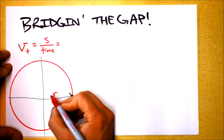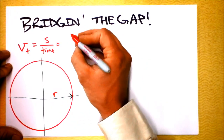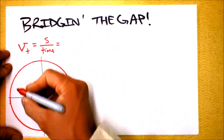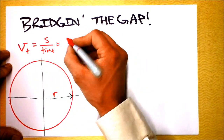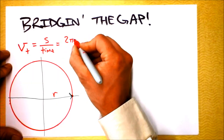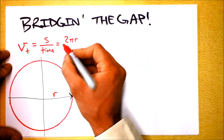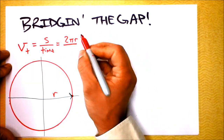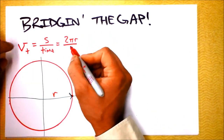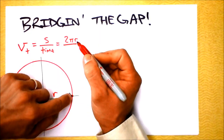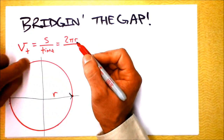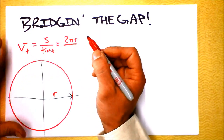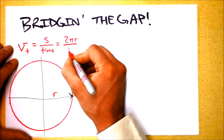If this circle has radius r, the arc length going all the way around is 2πr — everyone learned in fifth grade that the circumference of a circle is 2πr. The amount of time it takes for something to go all the way around has a special name: it's called the period.